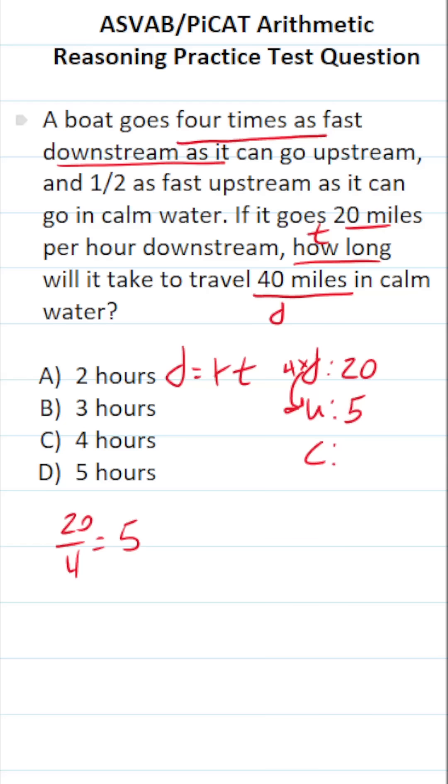And then finally, it says one half as fast upstream as it can go in calm water. So this 5 miles per hour is equal to half the speed or rate that the boat goes in calm water. To solve this for C, the rate of the boat in calm water, we're going to multiply both sides of this equation by the reciprocal. This crosses out here and here, leaving you with C on this side. 2 over 1 is just 2. So this is 2 times 5, which is 10. So the rate of the boat in calm water is 10 miles per hour.